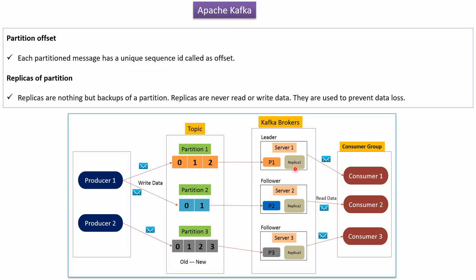Replicas of partition: replicas are nothing but backups of a partition. Here you can see replica 1, replica 2 which is a backup of partition 2, and replica 3 which is a backup of partition 3. Replicas never read or write data directly. Replicas are used to prevent data loss.